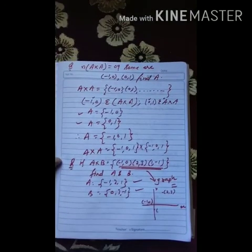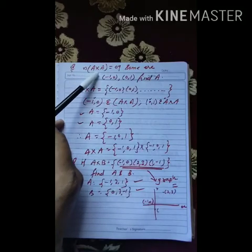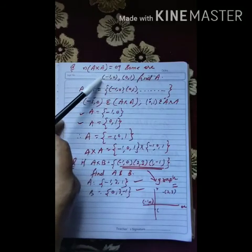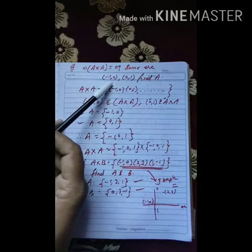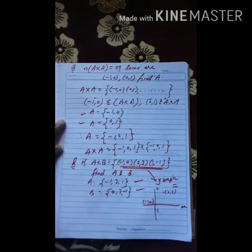Now, take another example. Number of elements in A x A is 9. And some elements of A x A are given as (-1, 0), (0, 1). In this we have to find the set A.